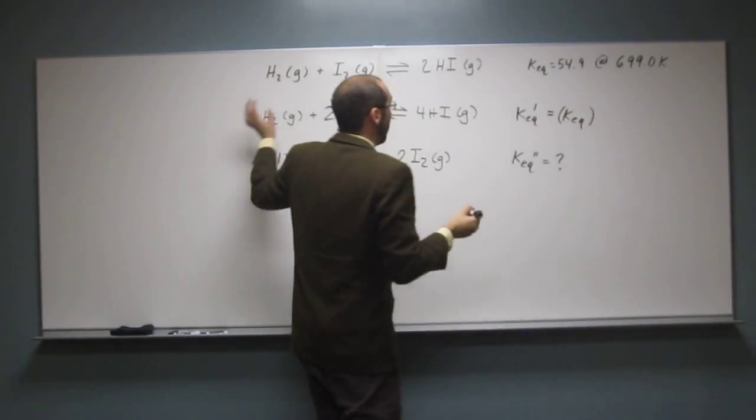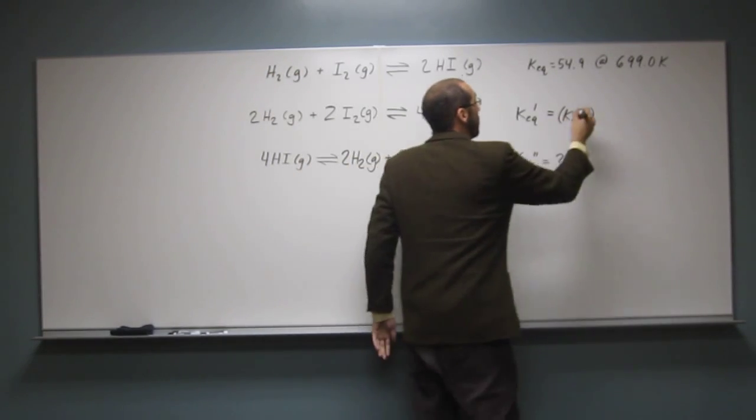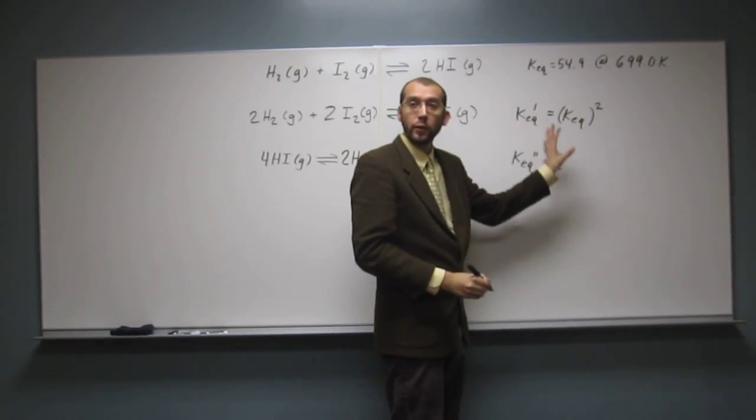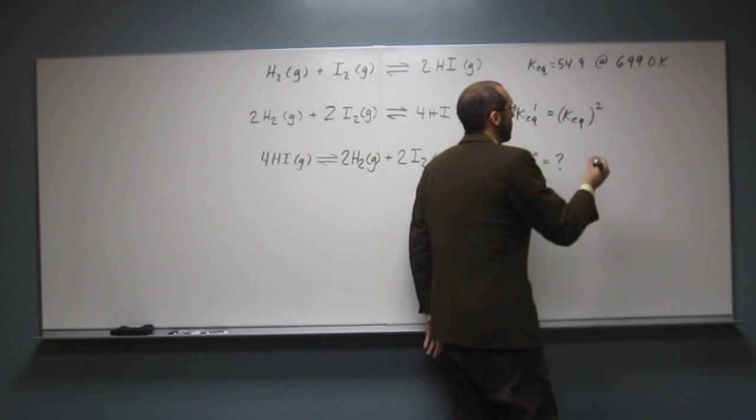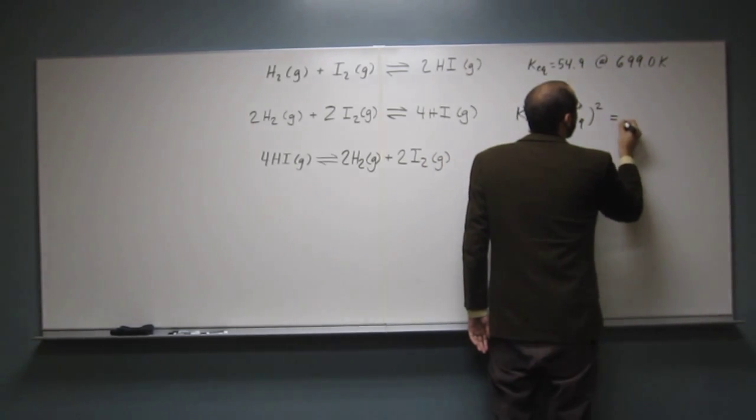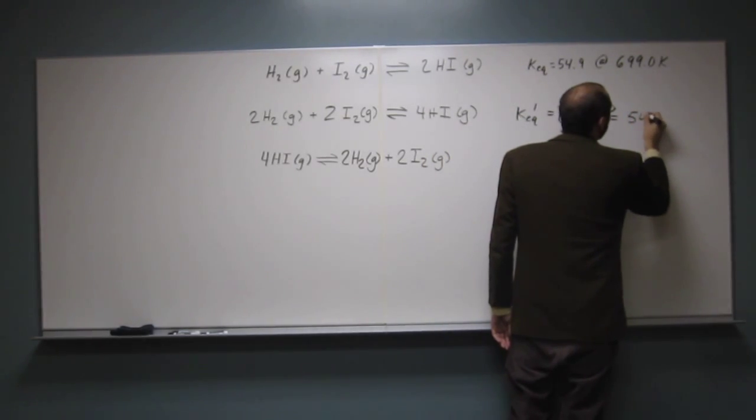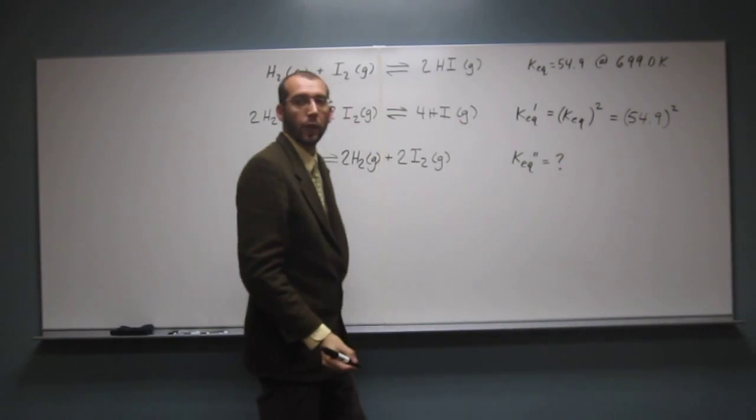So in other words, KEQ prime is going to be KEQ, and in this case, since we multiplied everything by 2, we're going to square it, like that. Does that make sense? So that's just the process. So in this case, it's going to be 54.9 squared, like that.